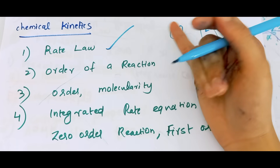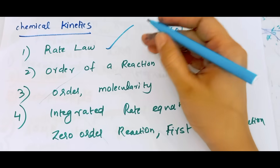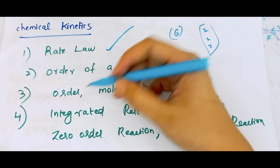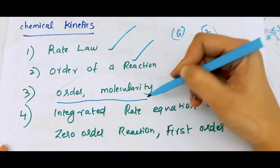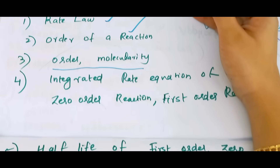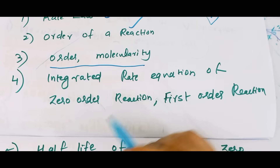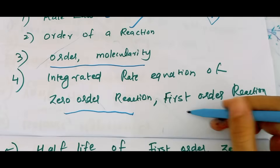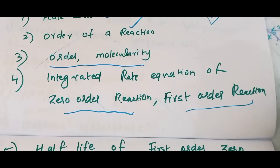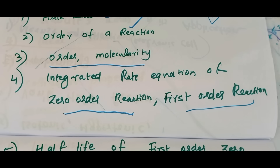In the chemical kinetics, what is the rate of expression? What is the order of a reaction? What is the order of molecules? We will also compare it. Then, integrated rate equation of zero order reaction. First order reaction is the derivation. We will see the integrated rate equation of zero order and first order.